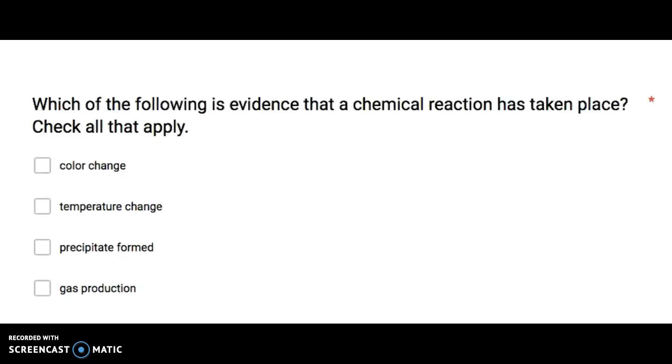Which of the following is evidence that a chemical reaction has taken place? Check all that apply. Color change. Temperature change. Precipitate formed. Gas production.